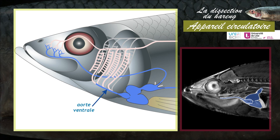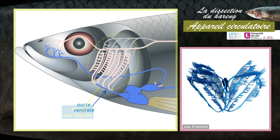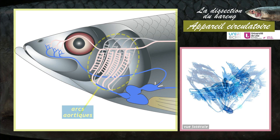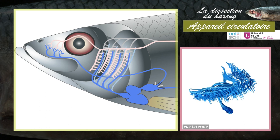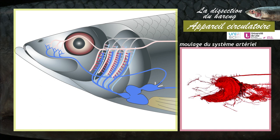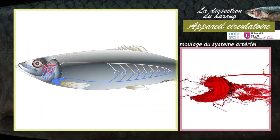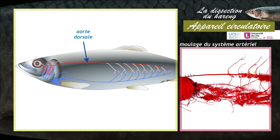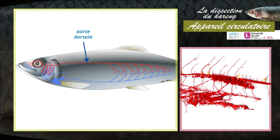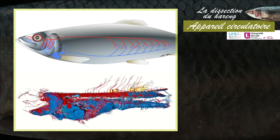Le cœur est donc traversé uniquement par du sang veineux. L'aorte ventrale se ramifie en quatre paires d'arcs aortiques. Le sang arrive aux branchies par les artères branchiales afférentes qui se capillarisent dans les filaments branchiaux. Le sang oxygéné quitte les branchies par les artères efférentes qui fusionnent dans une aorte dorsale unique, laquelle se ramifie pour irriguer la tête et les autres organes du corps. Ce moulage du système circulatoire réalisé chez un téléostéen montre l'ensemble des veines et des artères.